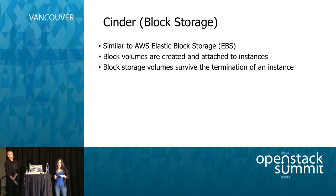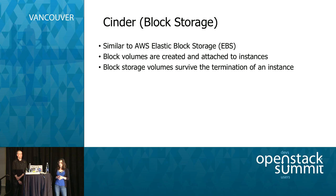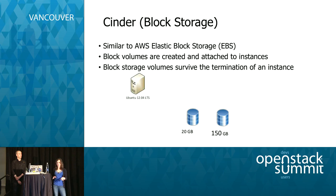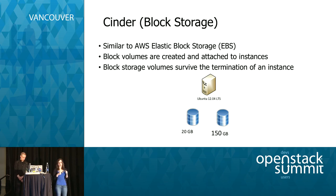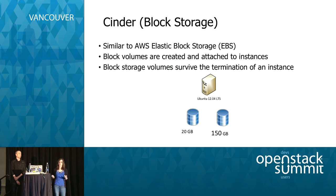The other type of storage in OpenStack is Cinder, or block storage — like a cinder block. It's very similar to AWS's Elastic Block Storage. In Cinder, you create a volume which you attach to an instance — just a virtual machine or guest. Cinder volumes survive the termination of an instance. Coming from a virtualization background, you're used to taking care of virtual machines carefully. With OpenStack and Cinder, instances are disposable — if you need to upgrade an OS, blow away the instance, deploy a new one, and reconnect your Cinder volumes. It's a very different way of thinking, but it's another layer of abstraction.